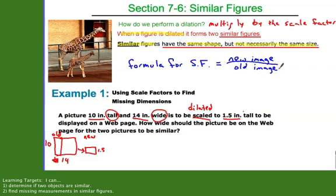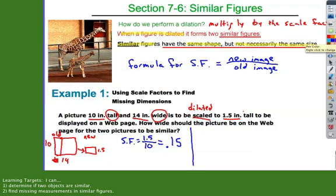Take a look at this one. Our new dimensions, if we look at new over old, our new dimensions are 1½ inches tall to 10 inches tall on the old one. If I divide that out, it's 0.15. Now, think about that. Would that make sense? It should because that means it's 15 one-hundredths as big. If I multiply the old by 0.15, I get a smaller object.